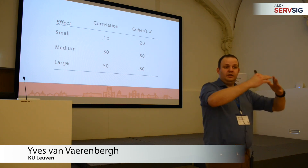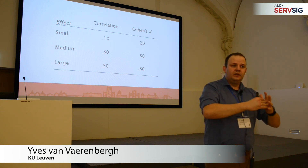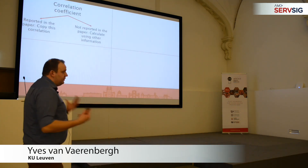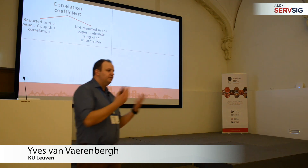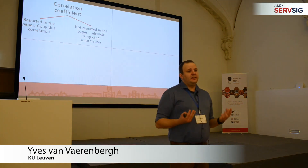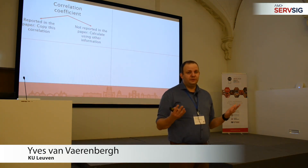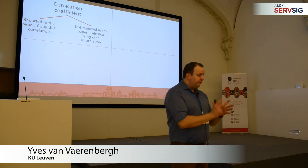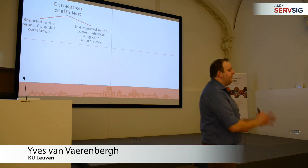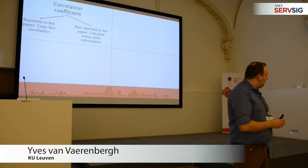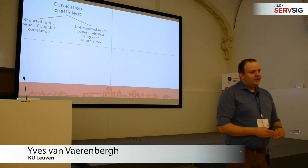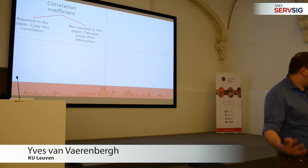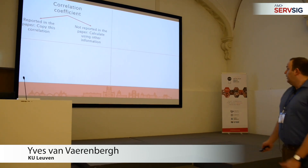It's a standardized metric from minus one to one. If we can convert all statistics into that metric, then we have the perfect solution because then we can start comparing and integrating all those studies. So in order to do that, we need to find a way to convert them. The easiest thing is when the correlation coefficient is reported — that's the easiest of all. It becomes more problematic when it's not reported, because then we need to do all sorts of magic tricks to turn the statistics we observe into a correlation.